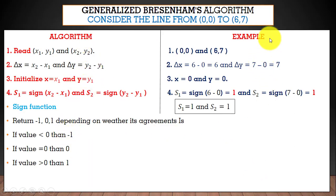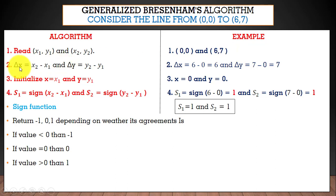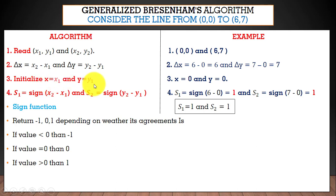This is the algorithm, and this is the example: we are going to draw a line between two endpoints. First, we read the two endpoints: x1, y1 and x2, y2. The values are x1=0, y1=0, x2=6, y2=7. Next, calculate delta x = x2 − x1 = 6, and delta y = y2 − y1 = 7. Initialize x = x1 = 0 and y = y1 = 0, giving us the first point (0,0). Now we check the value for s1.